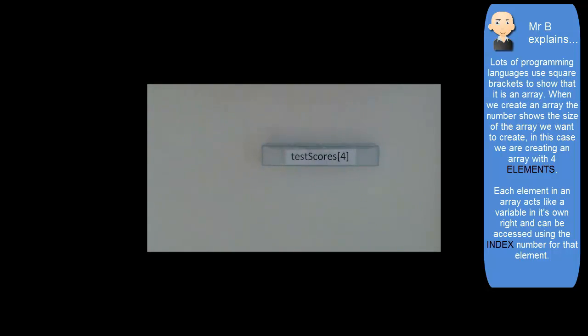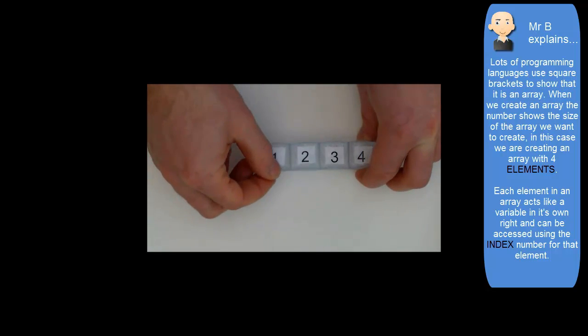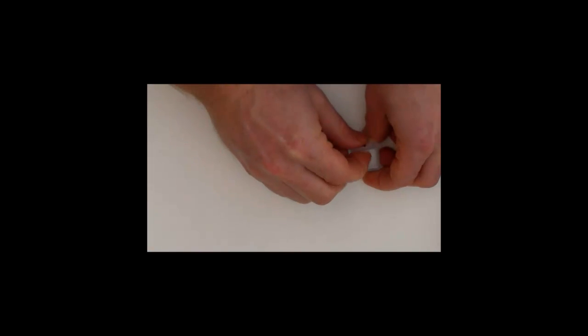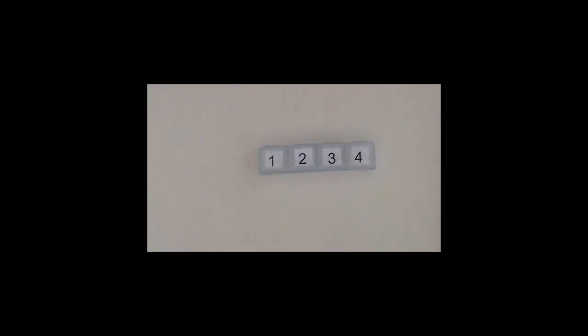This array has been set to four elements. An element is like a compartment within the array. So my array testScores here has four compartments—one, two, three, and four—and each of those acts like a separate variable where I can place values.